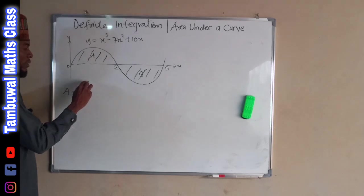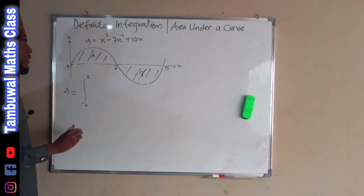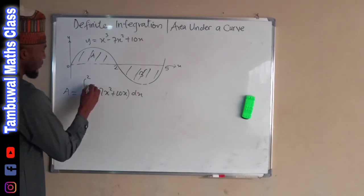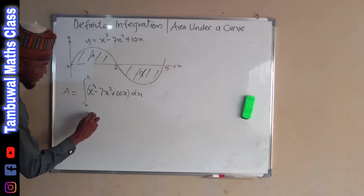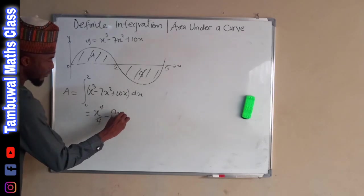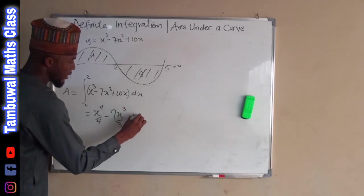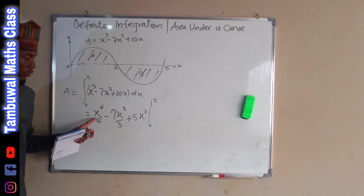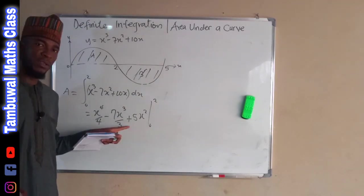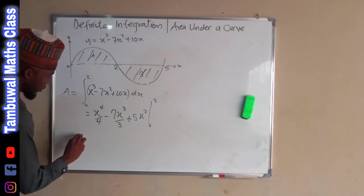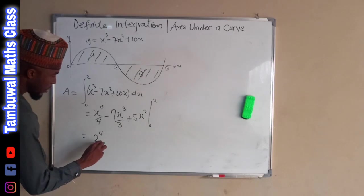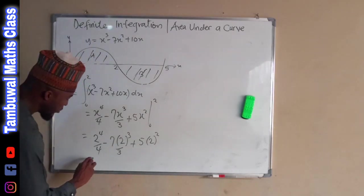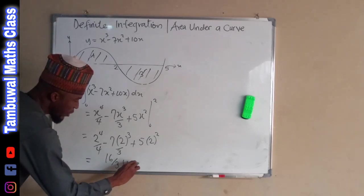So this point is 5, this is 2, and this is 0. Now we find area A first: the integral from 0 to 2 of x cubed minus 7x squared plus 10x with respect to x. Integrating gives x to the power of 4 over 4 minus 7x cubed over 3 plus 5x squared, with boundary from 0 to 2. Substituting x equal to 2: 2 to the power of 4 over 4 minus 7 times 2 cubed over 3 plus 5 times 2 squared, which simplifies to 16 over 3 unit squared.